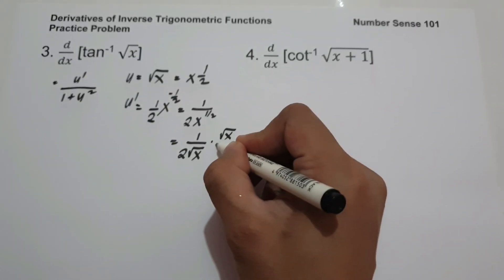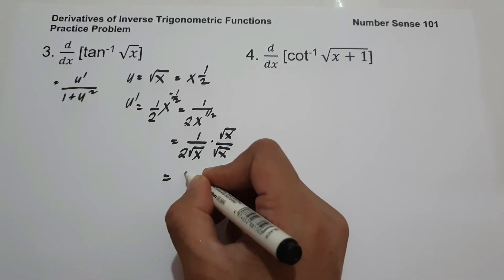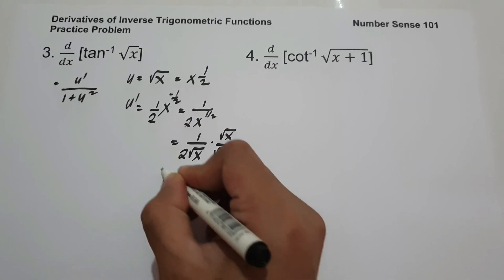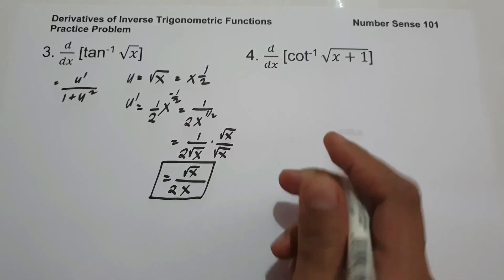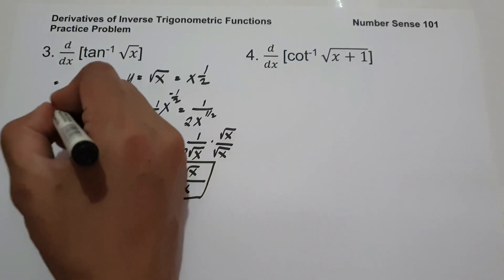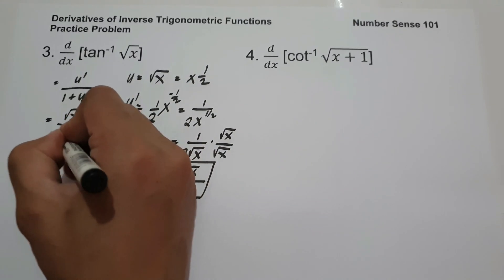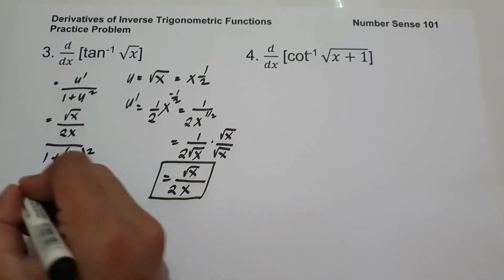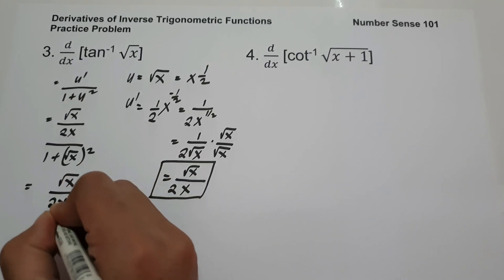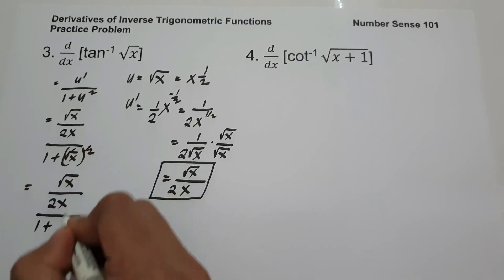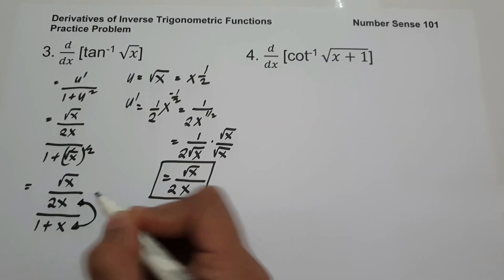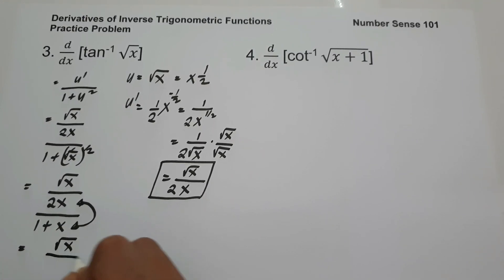To rationalize, multiply numerator and denominator by square root of x. So 1 times square root of x is square root of x, and 2 times square root of x times itself is 2x. This gives u' equal to square root of x over 2x. Now substituting into the formula, we have square root of x over 2x divided by 1 plus u squared, where u squared is square root of x raised to 2, which simplifies to x.